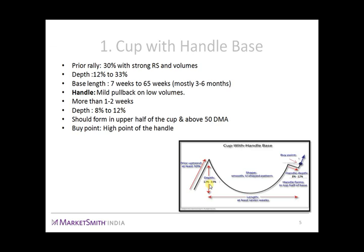The depth of the base — the correction observed during the consolidation period — should be 12% to 33%. However, in a severe bear market a stock might correct up to 40% to 50%. But if one stock corrects 35% and another corrects 20%, all else being equal, the stock that corrected less (i.e., 20%) could be forming a stronger base. The minimum length for the cup is seven weeks, but some can last up to a year or even more; however, most of them last three to six months.